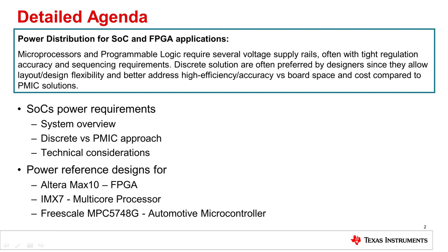Microprocessors and programmable logic require several voltage supply rails. These often require tight regulation accuracy and sequencing. Discrete solutions are often preferred by designers since they allow layout design flexibility and better address high efficiency or accuracy versus space occupancy and costs, compared to PMIC solutions. We can't dive into designs without recalling a system overview and highlighting some of the technical considerations behind the problem.